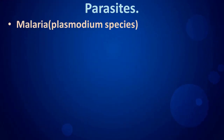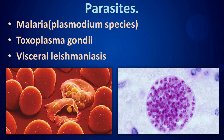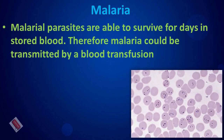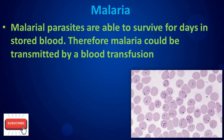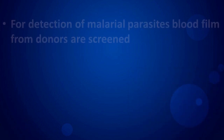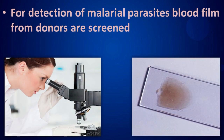Parasites that can be transmitted by blood transfusion include Plasmodium species causing malaria, Toxoplasma gondii, and visceral leishmaniasis. Malarial parasites are able to survive for days in stored blood, so malaria could be transmitted by blood transfusion. For detection of malarial parasites, blood films from donors are screened.